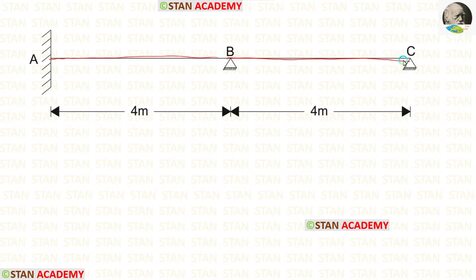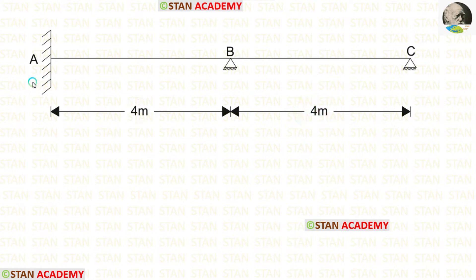In both of the spans there are no loads. Span AB is 4 meters long and span BC is also 4 meters long. In point A, we have a fixed support. In points B and C, there are hinged supports.